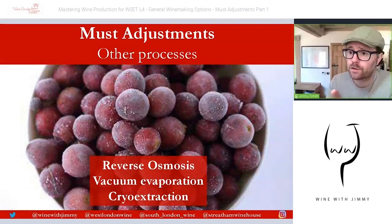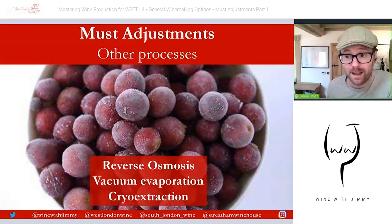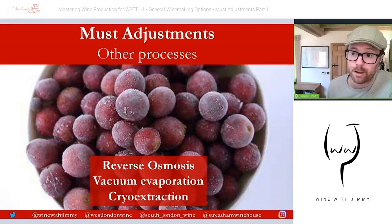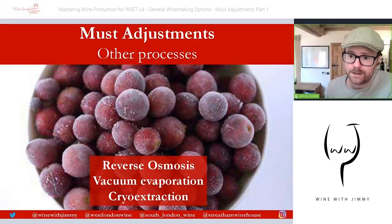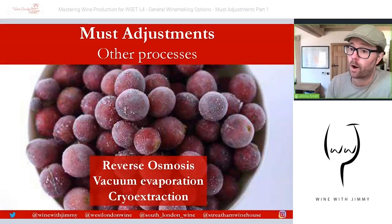Sugar levels in musts can also be concentrated by technological processes — specifically the removal of water. These include reverse osmosis, vacuum evaporation, and cryo extraction, which involves freezing the must or even the final wine to remove the ice, thus concentrating what is left behind. Reverse osmosis and vacuum evaporation are expensive due to the initial cost of the scientific equipment required, so these are limited to wines of a very premium nature or those producing exceptionally high volumes where the investment makes sense.